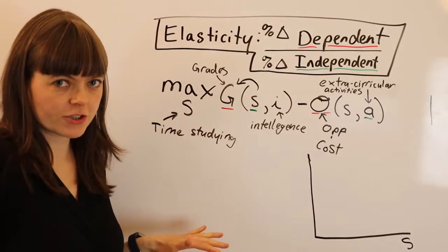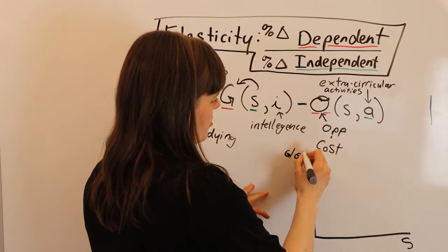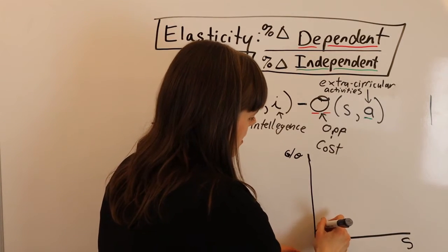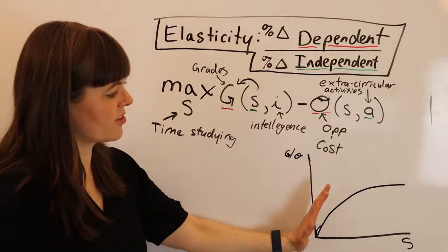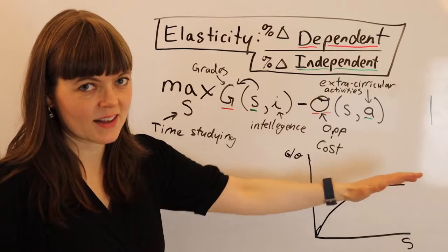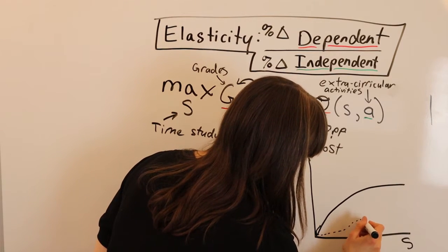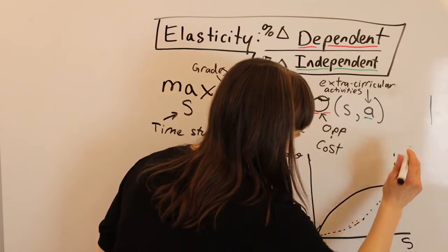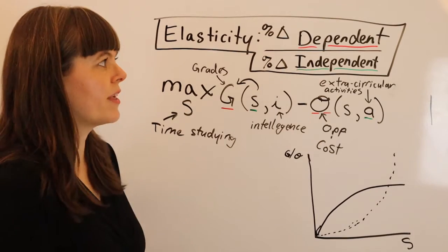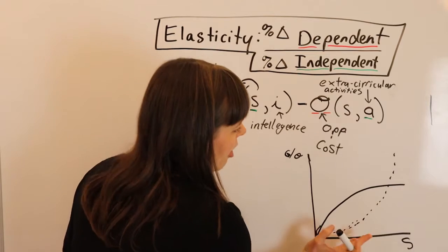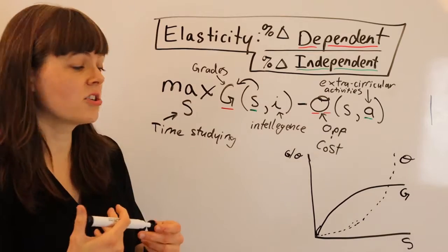We can take the first order conditions and draw pictures of these graphs. We can draw grades and opportunity cost as a function of time spent studying. The grades function is diminishing at the margin — there's diminishing marginal benefit to studying in terms of the effect on your grades. And there's increasing marginal cost. The opportunity cost has a classic shape where it's increasing at the margin, because the more time you spend studying, the more valuable the activities you give up are. So there's a natural increasing marginal cost shape to that curve.